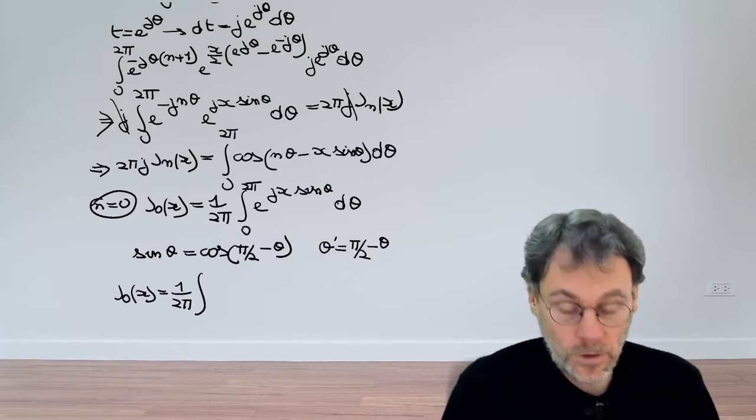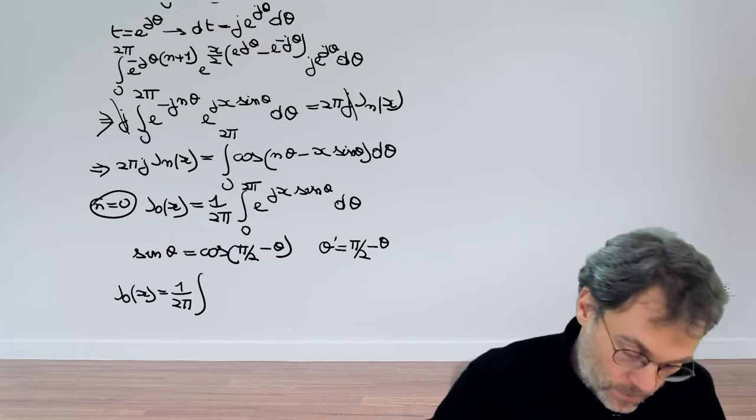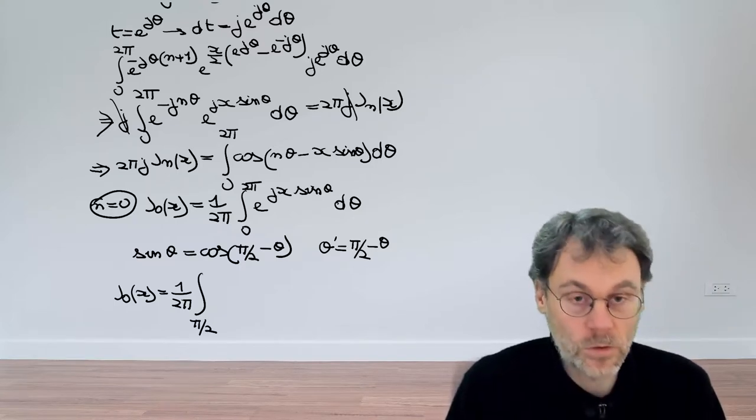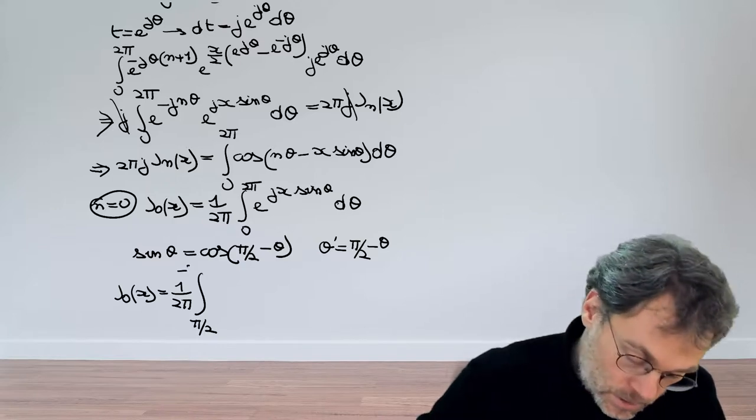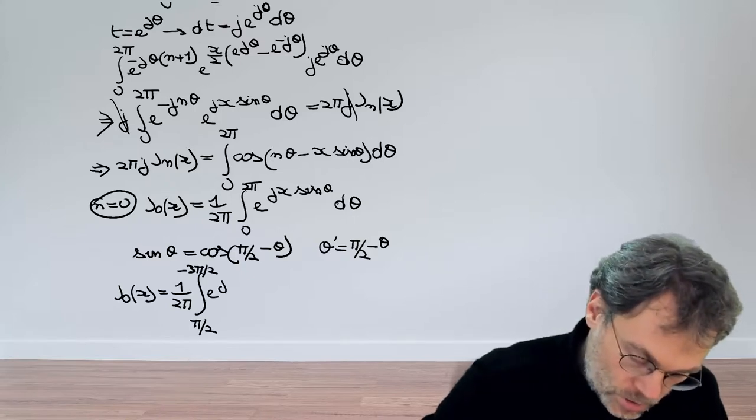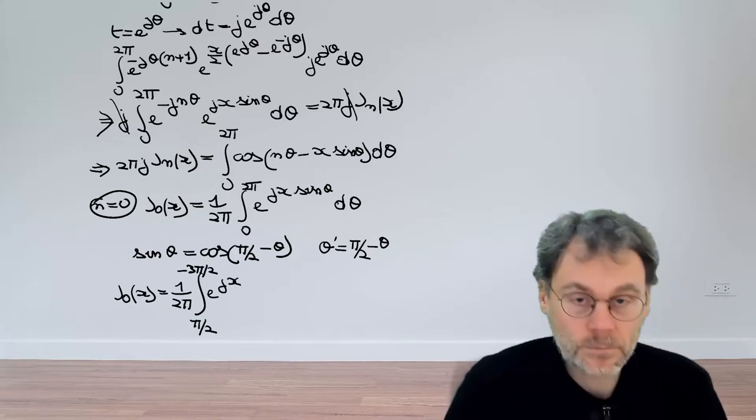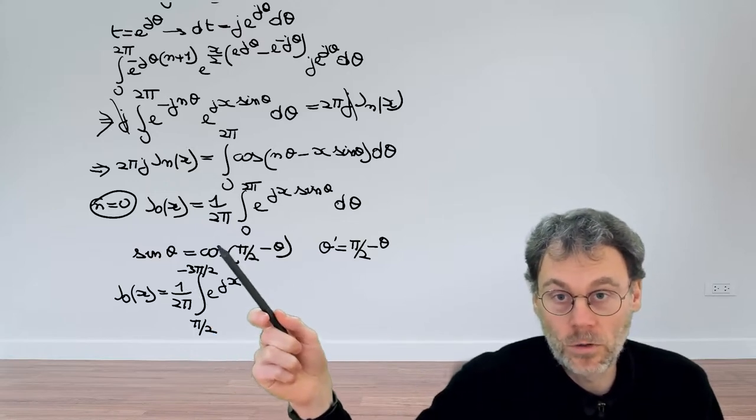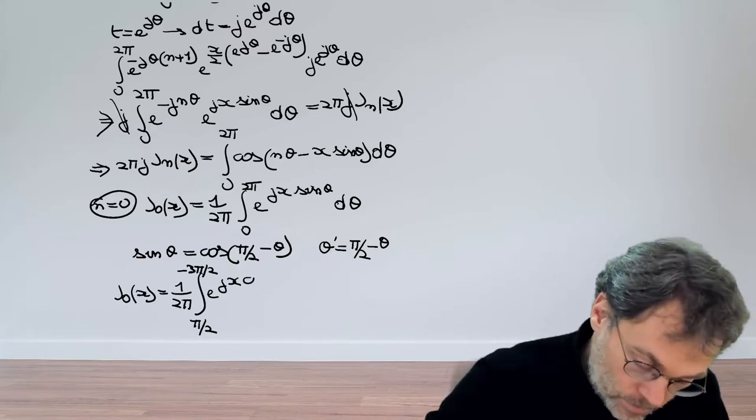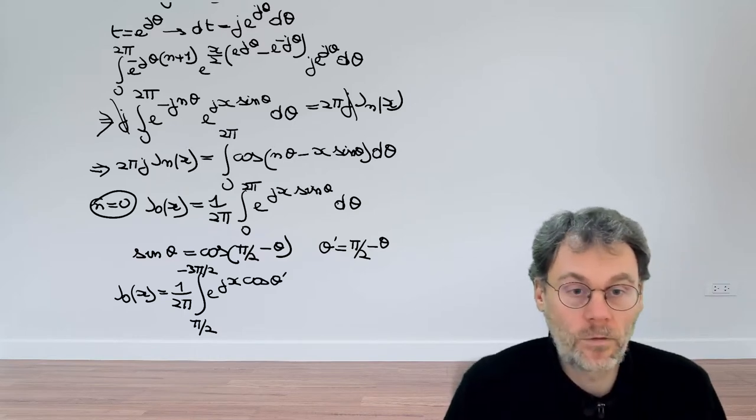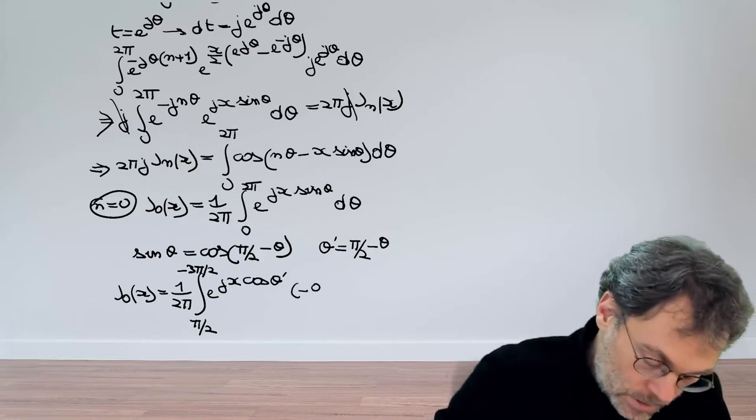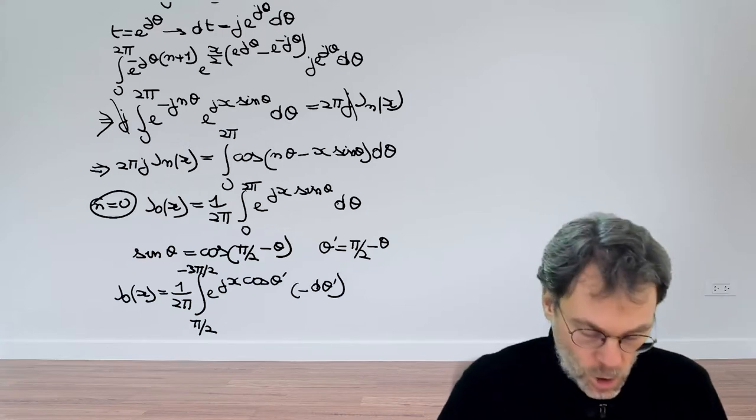So let's do that. j_0 of x, 1 over 2π. And then we have an integral. Our lower bound for θ used to be 0. Now for θ prime it's going to be π/2. The upper bound was 2π so now for θ prime it becomes minus 3π/2. Then we have exponential jx sine of θ or we can also write that as cosine of this thing which is basically the cosine of θ prime. So this is cosine of θ prime. And then we have dθ because of the minus sign that becomes minus dθ prime.